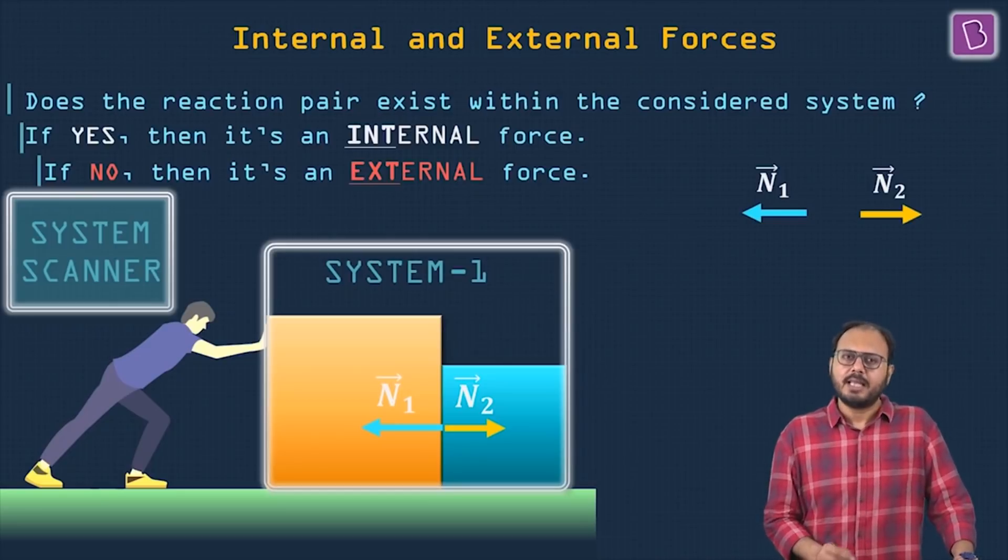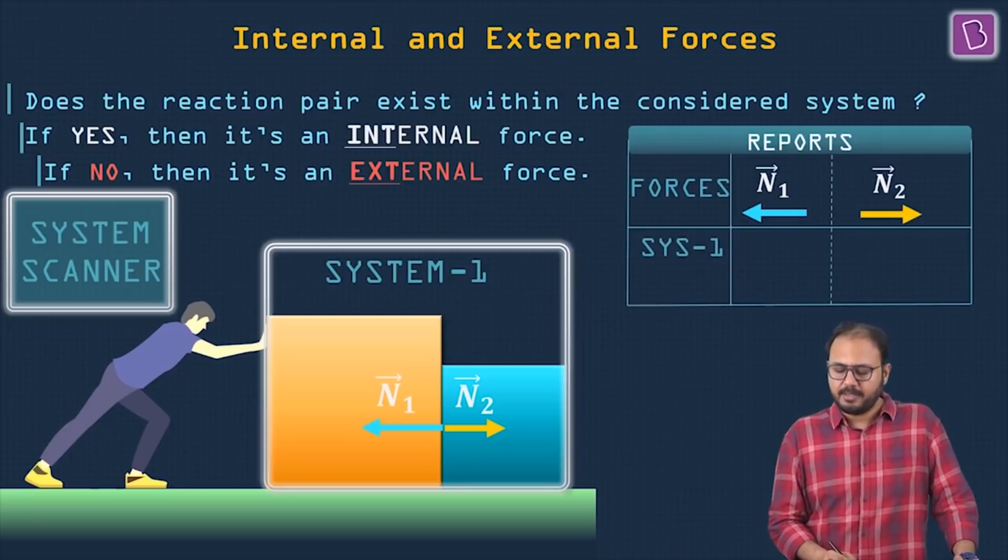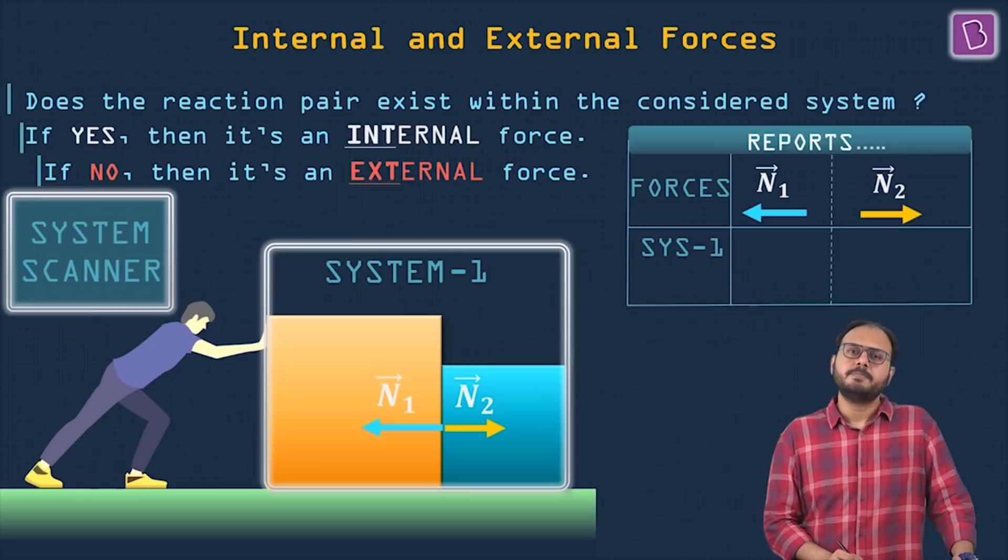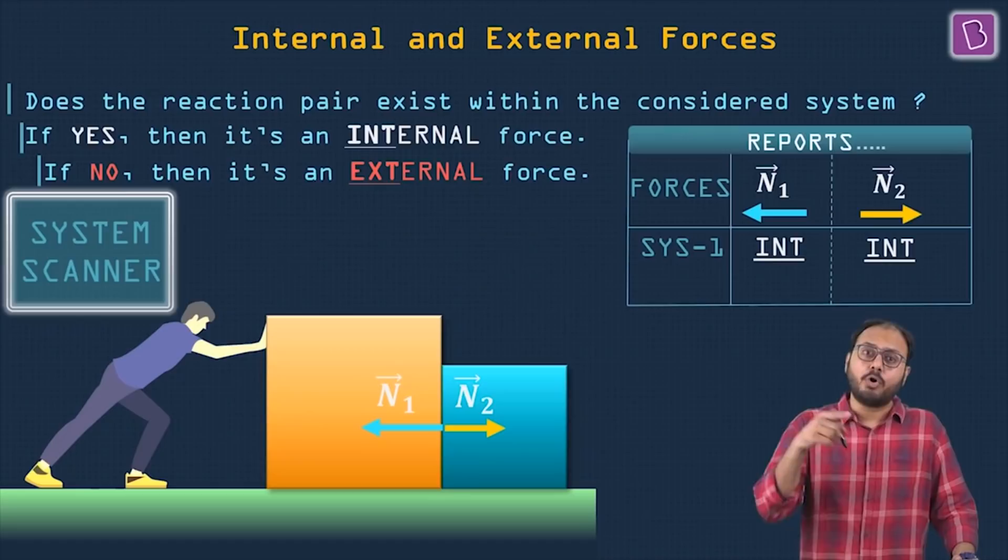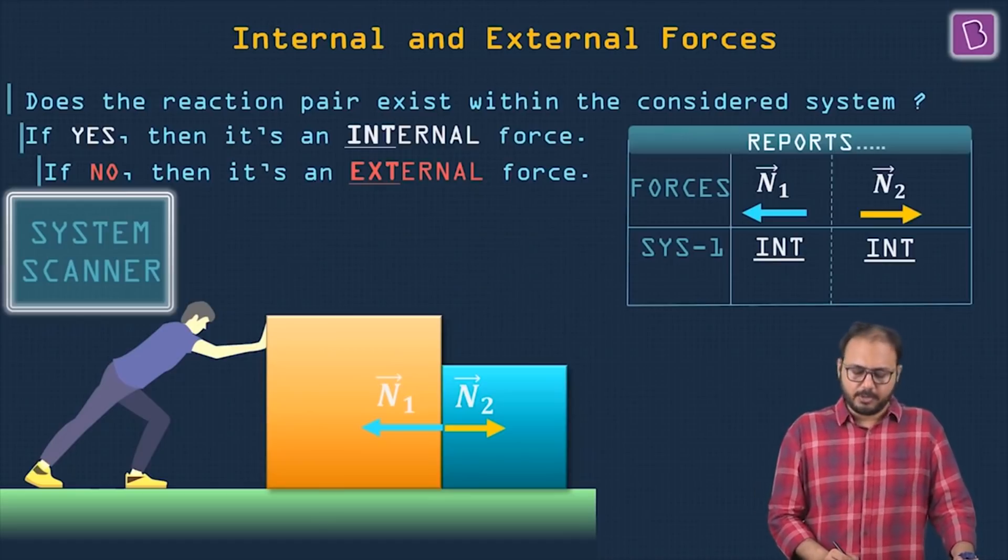Is N2, the reaction pair of N1, also in my white boundary? Yes sir, N2. That means these two forces are internal. These two forces are internal. Why? Because the reaction pair is also in the system. Hold on.